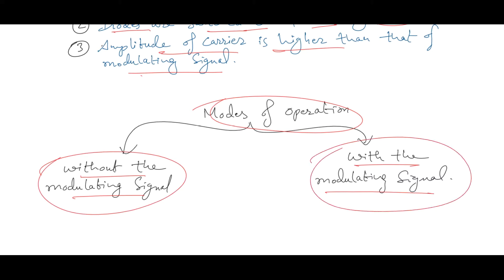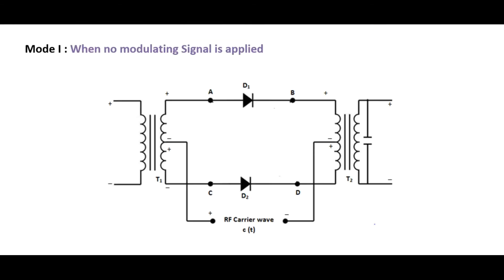The second mode is important to get the DSB-SC output. No modulating signal means m(t) is zero—the modulating input to the circuit is zero. The operation in this mode can be further divided into two different cases. This is Case 1, when carrier is positive in polarity.